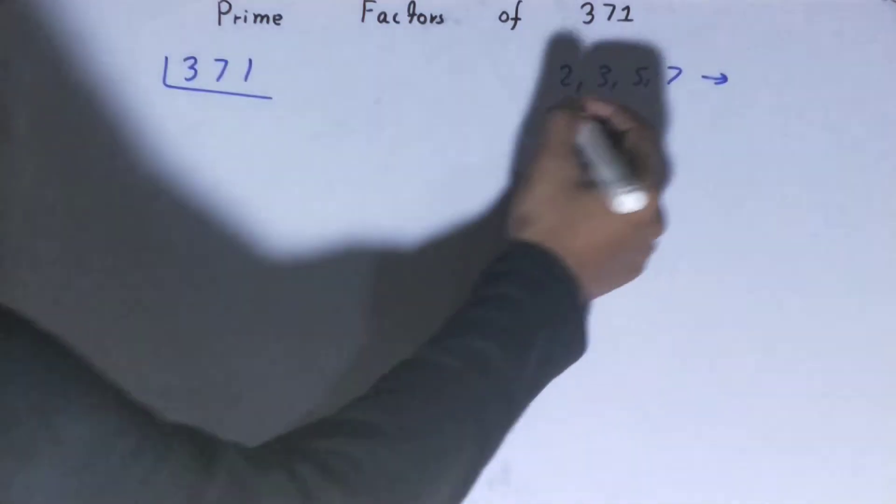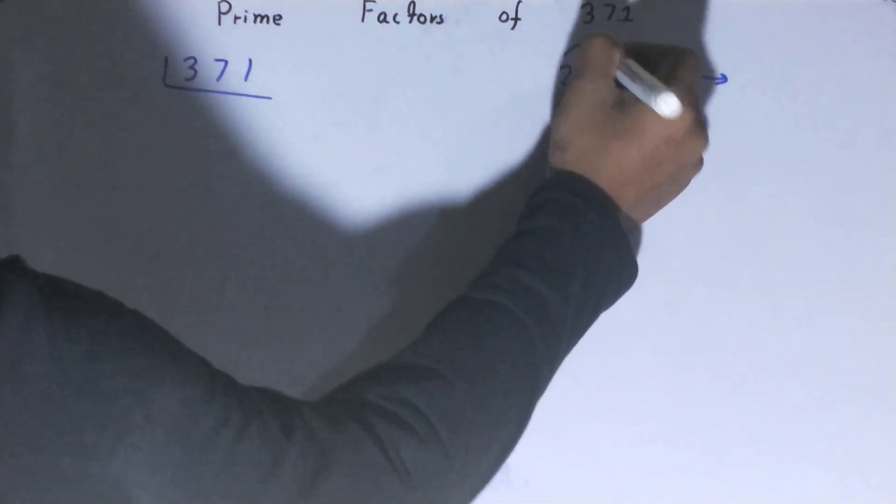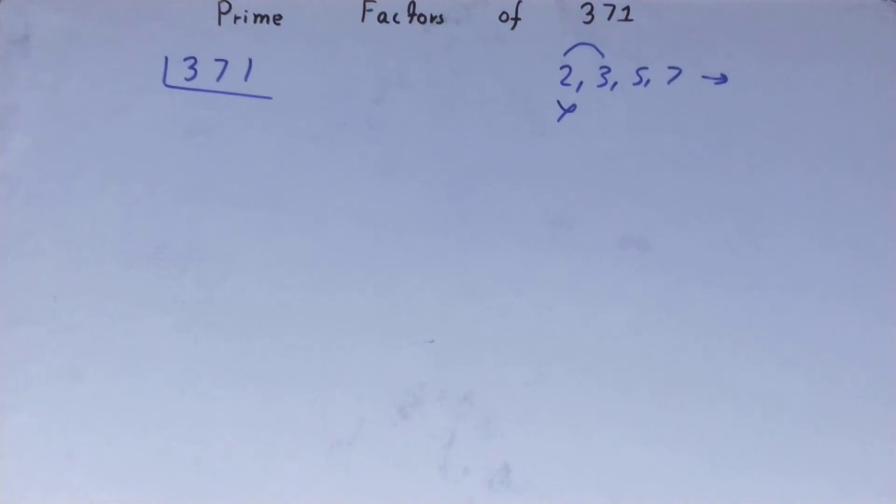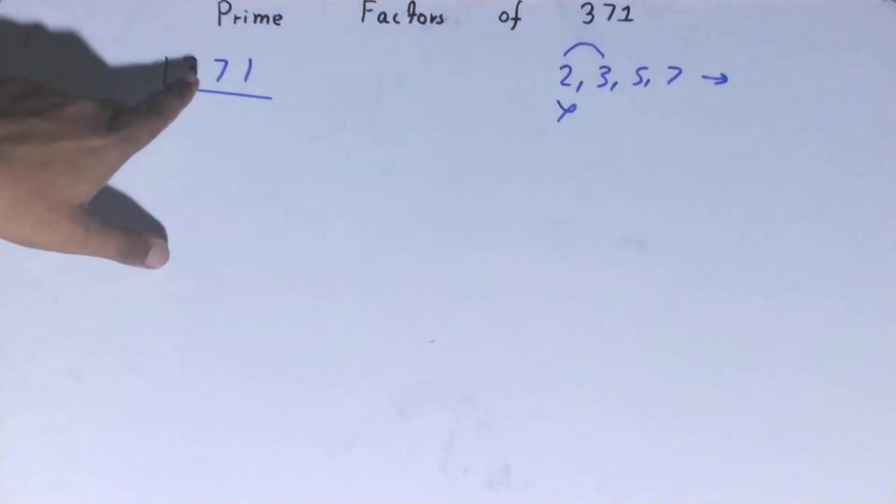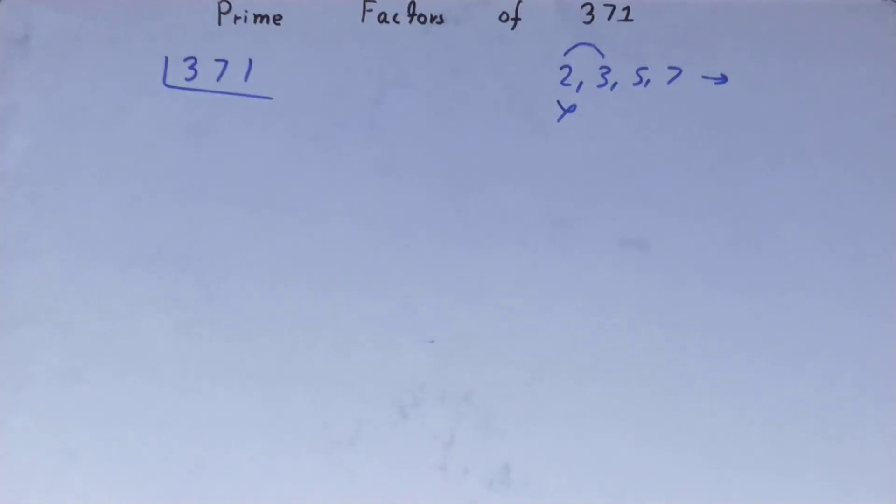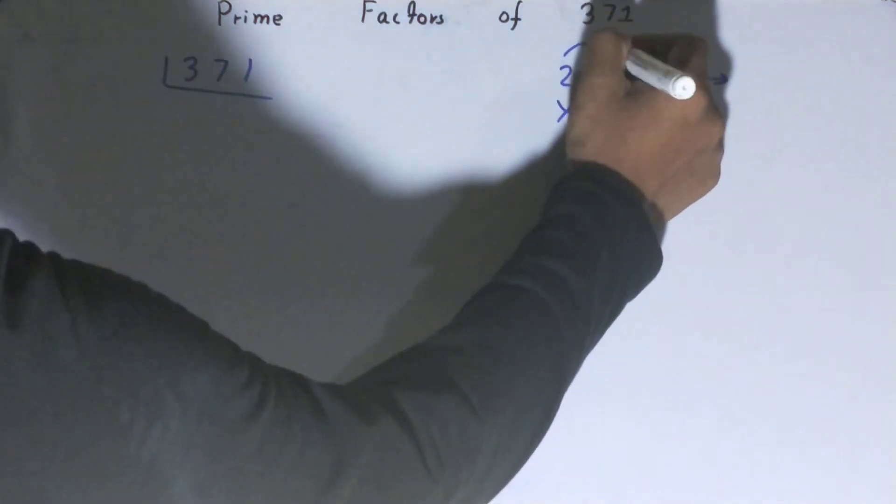So we'll go to the next lowest prime number, that is 3. Is the number 371 divisible by 3? Is 71 divisible by 3? No, so it is not divisible by 3.